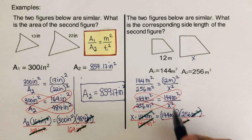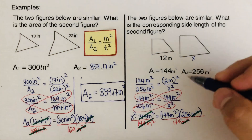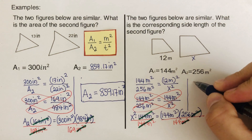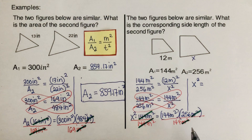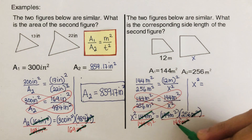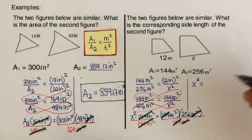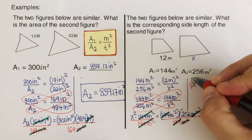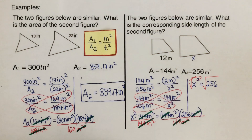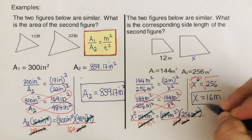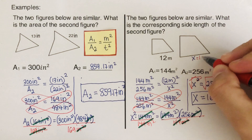By the way, this variable should be x squared. So x squared equals — we can also cross out the 144 on both sides — leaving us with x squared equals 256 meters squared. To find just x, we take the square root of both sides: the square root of 256 is 16, so x equals 16 meters. This side length is equal to 16 meters.